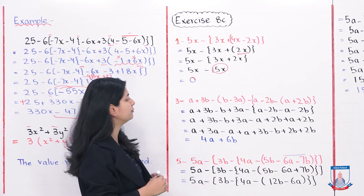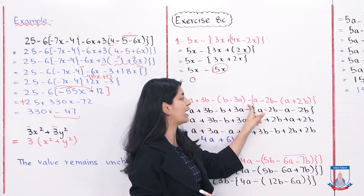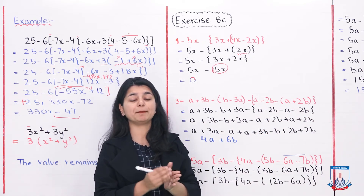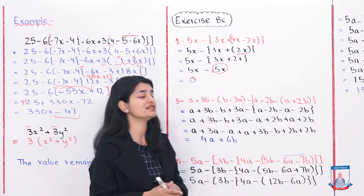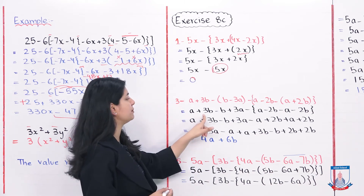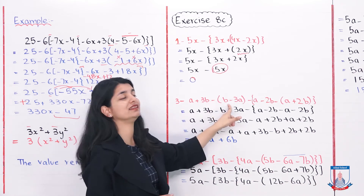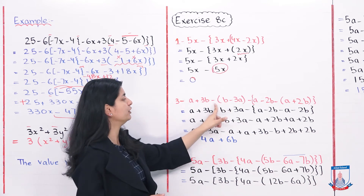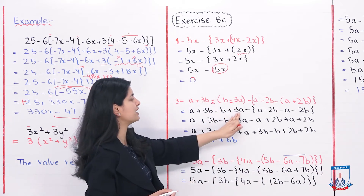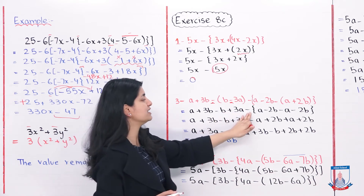In the same way, let's look at part 3. In part 3 we have: a plus 3b minus bracket b minus 3a, minus another bracket a minus 2b minus a plus 2b. The smallest bracket used here is the parenthesis — the round brackets. We will open them first. We write a plus 3b as it is, then to open the first bracket with the minus sign outside, we multiply minus by both terms inside: b becomes minus b, and minus times minus 3a becomes plus 3a.